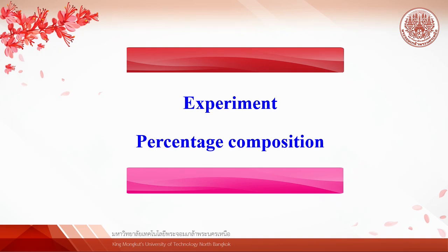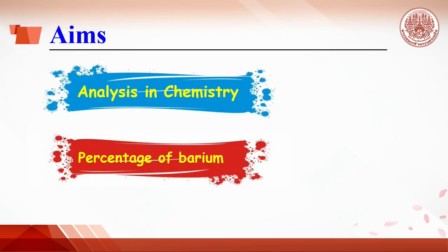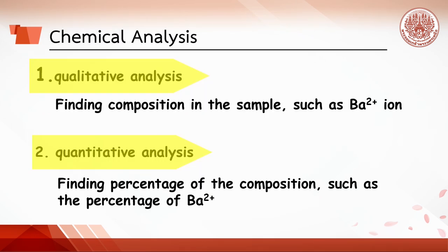The percentage composition experiment is aimed to understand analysis in chemistry and to determine the percentage of barium in a sample. Chemical analysis is divided into two sides. Qualitative analysis deals with the identification of elements or compounds in the unknown sample.